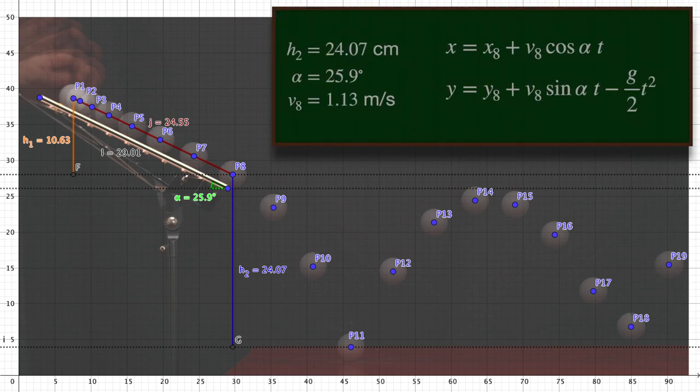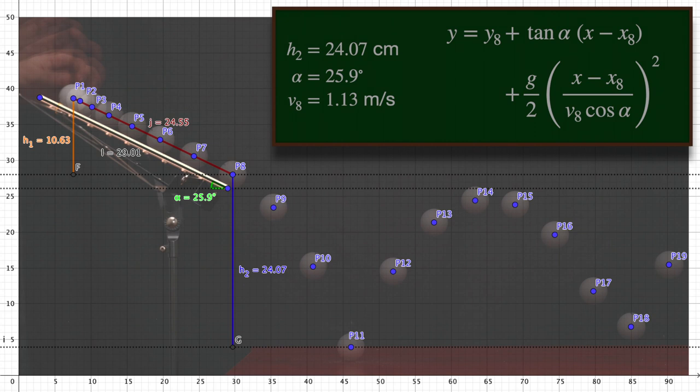Now we can move to the second part of the calculation. The free fall of the ball in the air can be described by the motion equations written here. As in the photo we are not looking at the space-time graph but at y as a function of x, let's get rid of the time by combining the two equations. What we get is a quadratic formula which we can plot. Hmm, it looks like the ball did not hit the table where it was supposed to. From the formula we can see that there are basically two things that could have gone wrong: either we got wrong the angle of the ramp or we got wrong the velocity in the point p8.